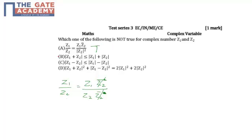Now coming to option B: mod of Z1 plus Z2 is always less than or equal to mod of Z1 plus mod of Z2. This is nothing but the triangle inequality - sum of two sides is always greater than any side. So this has to be true.